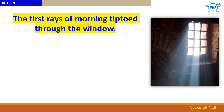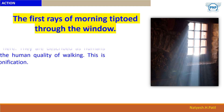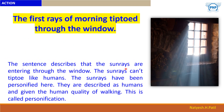So what does this sentence mean? The sun rays are entering through the window. The sun rays can't tiptoe like humans — they can't walk like humans. The sun rays have been personified here; our quality of walking has been given to the sun rays. They are described as humans, and this is called personification.